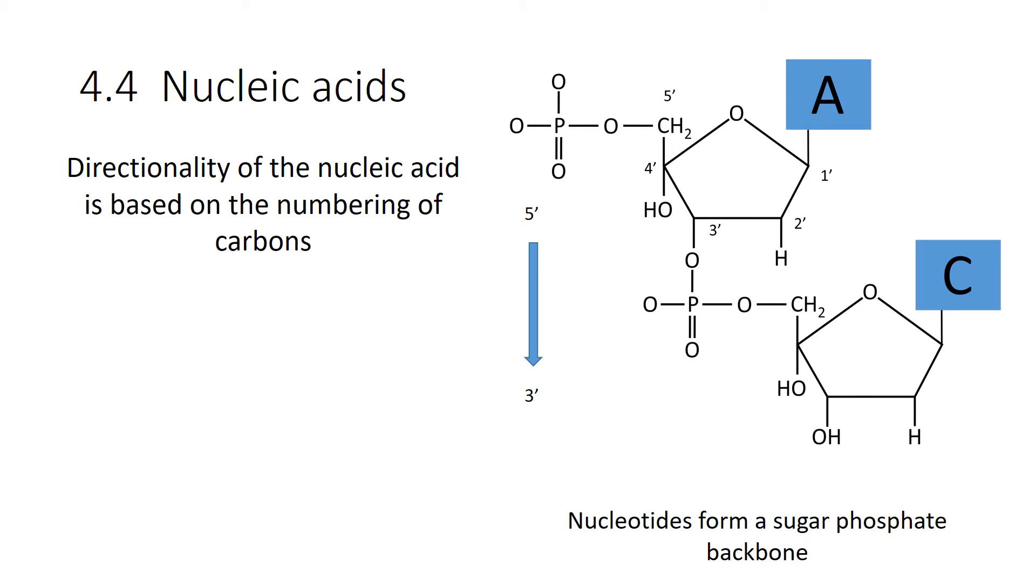Because there's numbers, you can see the 5 prime is up at the top, and 3 prime is at the bottom. What that means is that this molecule, a nucleic acid, has directionality. And we would say in this case, it's going from the 5 prime to the 3 prime end.